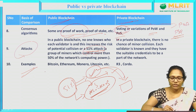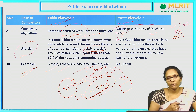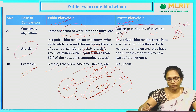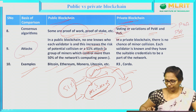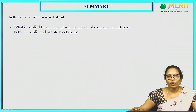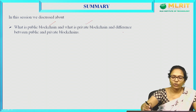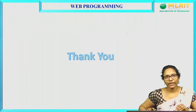In public blockchain, examples include Bitcoin, Ethereum, Monero, Litecoin, and Namecoin. In private blockchain, examples include R3 and Corda. That is about public and private blockchain. In this video, we discussed what is public blockchain, what is private blockchain, and what are the differences between public and private blockchain. Thank you.